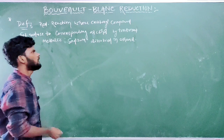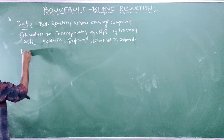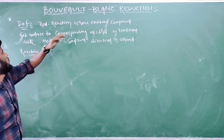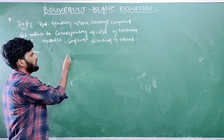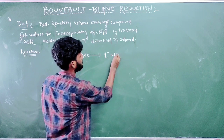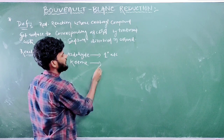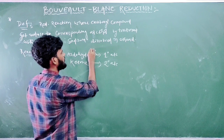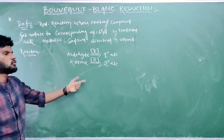So now coming to its reaction. The carbonyl compound reduces to corresponding alcohols — if the starting material carbonyl compound is an aldehyde, it will reduce to a primary (one degree) alcohol. If the starting material is a ketone, it gets reduced to a secondary (two degree) alcohol. Aldehyde reduces to primary alcohol and ketone reduces to secondary alcohol.